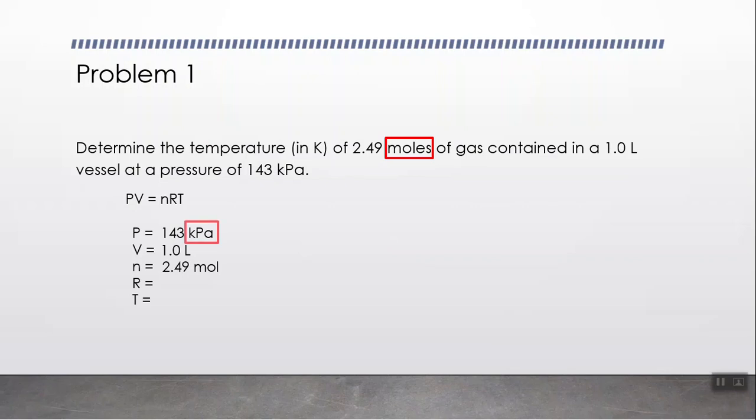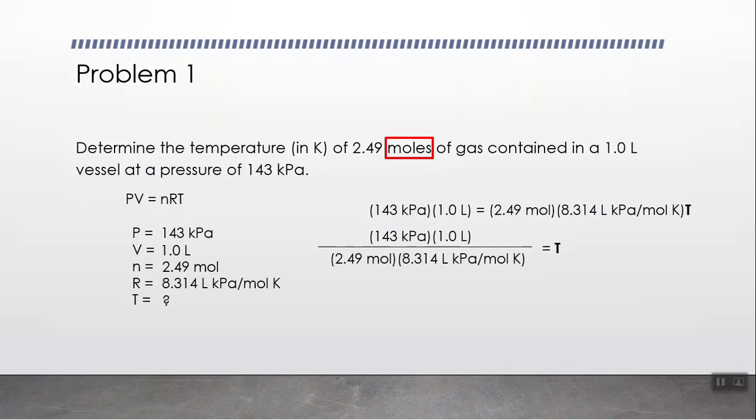We don't know the temperature. Looking at our pressure unit, which is kilopascals, the R value is 8.314. We're solving for temperature. Once we define all the variables, we're going to plug it into the formula and solve for T by multiplying and dividing. Our like units will cancel out. Kilopascals cancels out, liters cancels out, and so will moles. We are left with Kelvin, and that's exactly what we want.